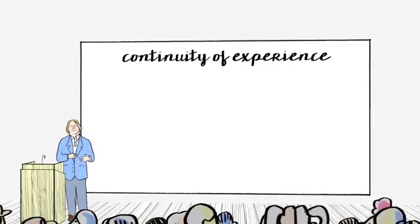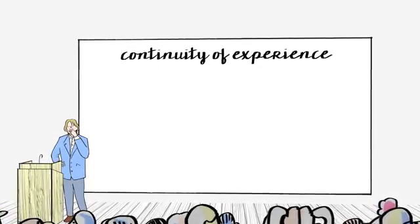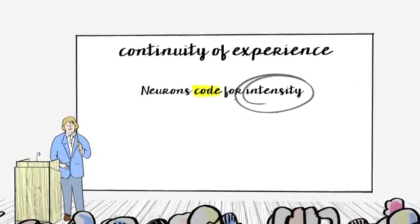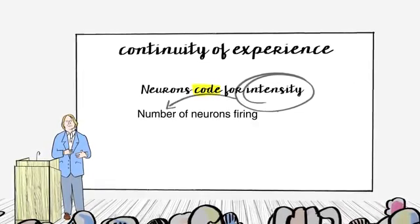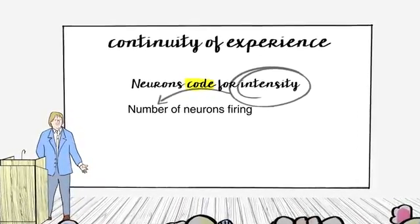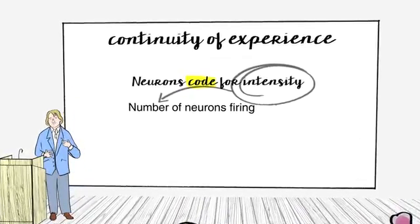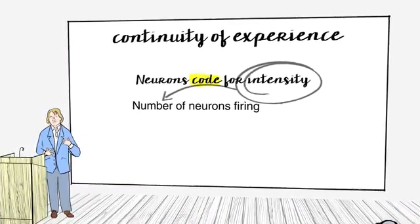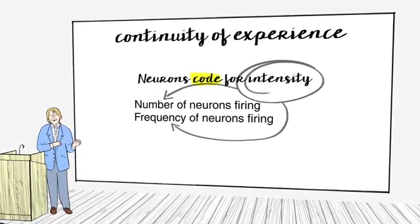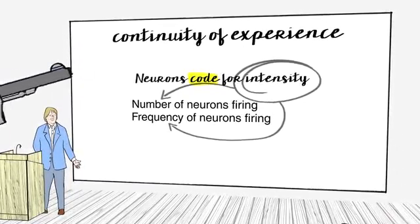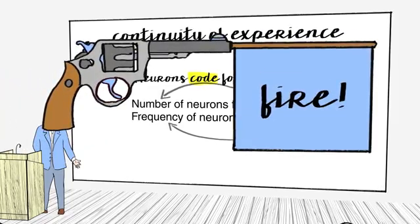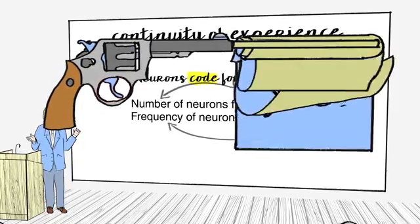But still, the neurons are all or nothing. The way we get to this continuity of experience is that neurons can code for intensity in different ways. So one way is in terms of the number of neurons that fire. If X neurons corresponds to a mild experience, X times 10 neurons might correspond to an intense experience. Another factor is the impulse frequency of individual neurons. So an individual neuron might denote a mild sensation by doing fire, fire, fire, fire, fire, while it might denote an intense situation with fire, fire, fire, fire, fire, fire.